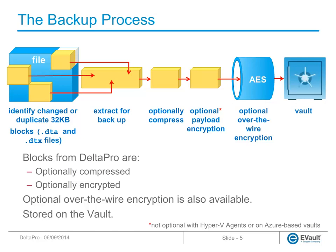eVault supports two different types of optional encryption: payload and over the wire. Payload encryption encrypts the data based on a user-supplied password. The data is encrypted before transit and remains encrypted on the vault. The latest version of the portal only offers the choice of no encryption or AES 256-bit encryption, while the older Windows and Web Central Control user interfaces offered six different types of payload encryption. Payload encryption is not optional with the new Hyper-V agents or when the vault is deployed in the Windows Azure cloud. If you configure payload encryption, you are prompted to provide a password which functions as a seed value for the encryption. Do not forget the encryption password — a lost password means that existing backups cannot be restored and a new backup seed must be created. Changing the encryption password or algorithm will also result in a new seed backup, although older backups would still be restorable using the old password.